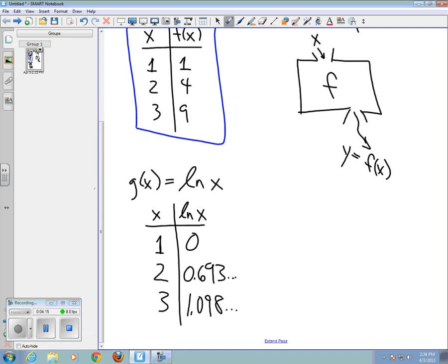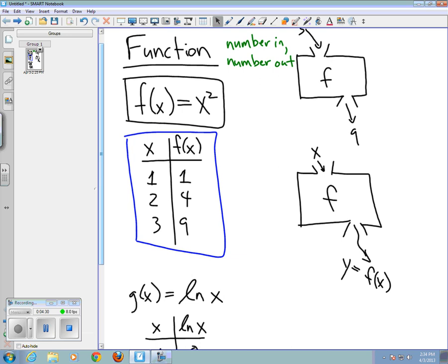So I could describe the natural log function by giving a table of values. But if this was all the bigger my table was, then all I would know the natural log of would be 1, 2, and 3. Whereas with the function f(x) = x², even though my table only gives the values of the function for x equaling 1, 2, and 3, I can calculate the function values for other values myself.